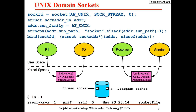The Unix domain socket address is different from the internet domain socket address. It uses the sockaddr_un address structure having two members. The first is sun_family, assigned the value AF_UNIX or AF_LOCAL. The second member is sun_path, which specifies the path name of the socket. This sun_path member can hold a path name, be unnamed, or be abstract — see the man page of unix from section 7 for details.